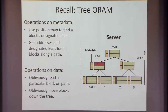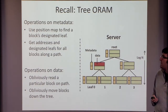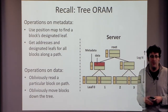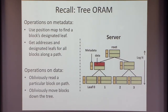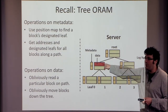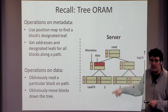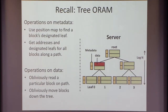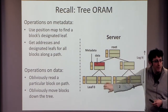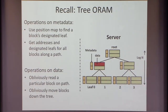On the data, intuitively, you want to move it around in an oblivious way. You might want to obliviously read a particular block — I want to read this block but not reveal which block on the path I'm reading — or actually move blocks down the tree without revealing where I'm moving them. The way tree ORAM or path ORAM does it is by downloading the whole path and moving things around manually. That's what we want to get rid of. The metadata we'll just read and write manually, same as before: read all the metadata all the time.